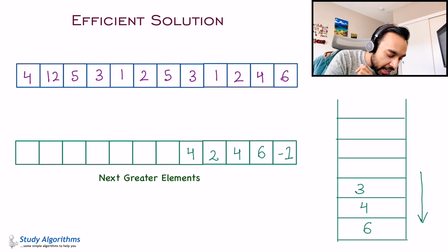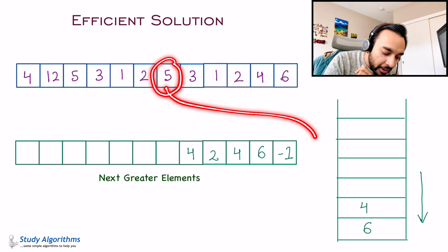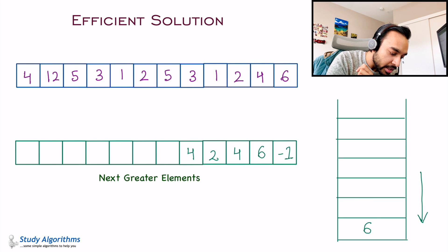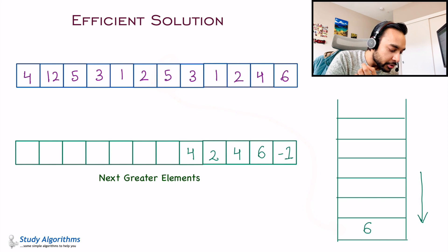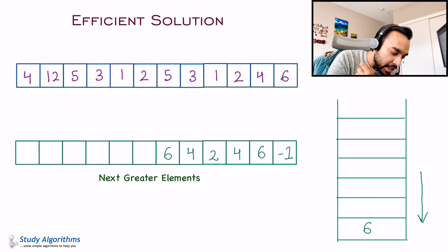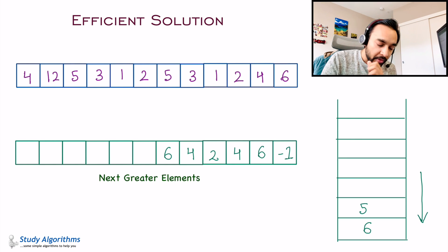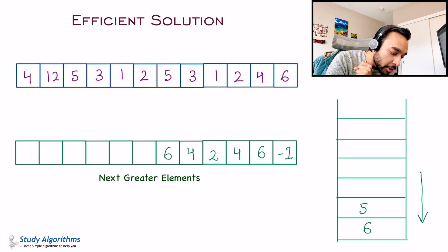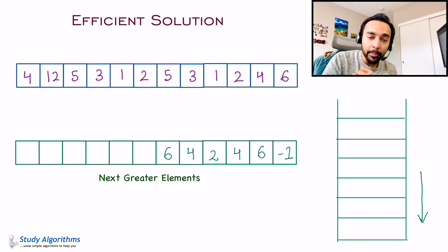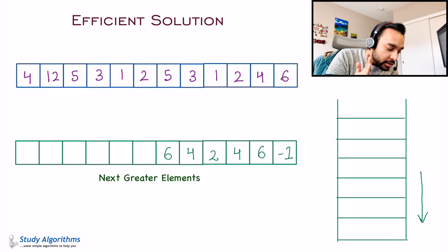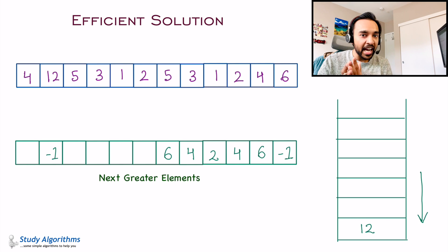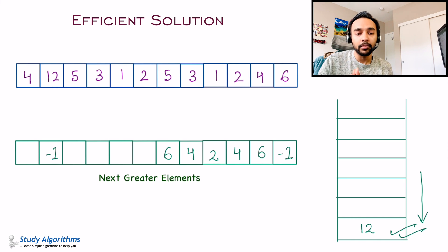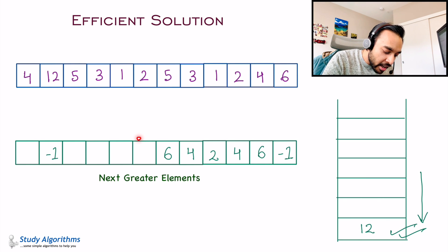Moving on, I have element 5. Compare 5 with 3 — 3 is smaller, remove it. Compare 5 with 4 — 4 is smaller, remove it. Compare 5 with 6 — 6 is larger, so I got my next greater element: 6. Add 5 to the stack. When you get element 12, the stack will become completely empty because there is no element greater than 12. As soon as the stack is empty, write down minus 1 in your answer and add the new element to the stack. Your stack will always have the greatest element at the bottom.